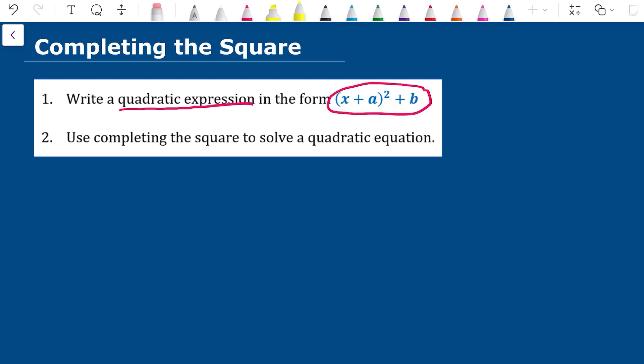They don't always use an a and a b. The question might say write this in the form (x + p)² + b or sometimes it will be a bracket (x + b)² + c. The letters don't really matter. The key thing is I'm writing my quadratic expression in a bracket to the power of 2 and I could have an additional term here. It could be plus or minus something here afterwards.